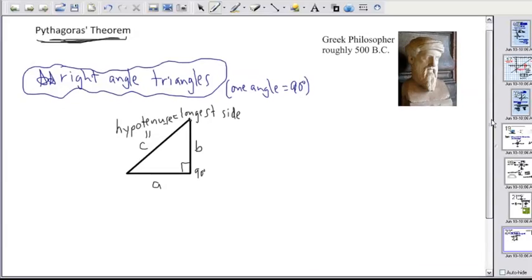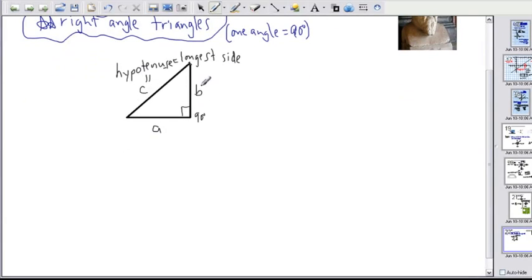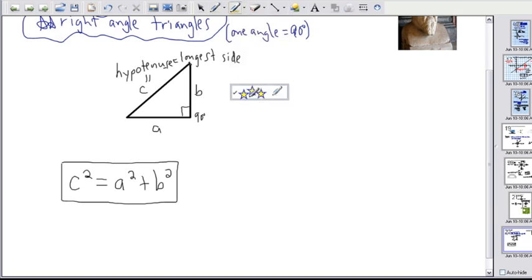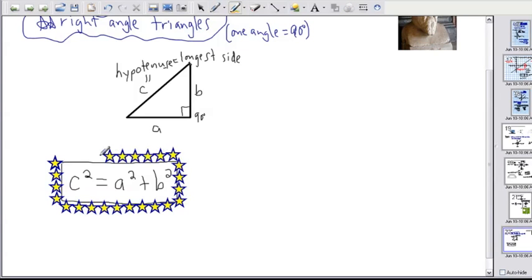Now the Pythagoras theorem says how these different side lengths are related. If we look at how long side A is versus how long B is and how long C is, he actually figured out a very clever relation. It just says this: C squared equals A squared plus B squared. That's it, that easy. C squared equals A squared plus B squared. That is so important. So that's Pythagoras theorem.